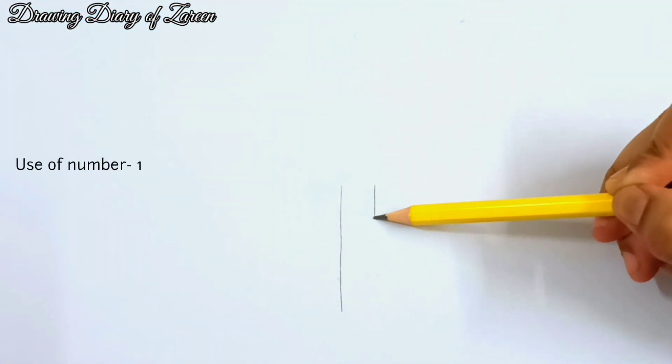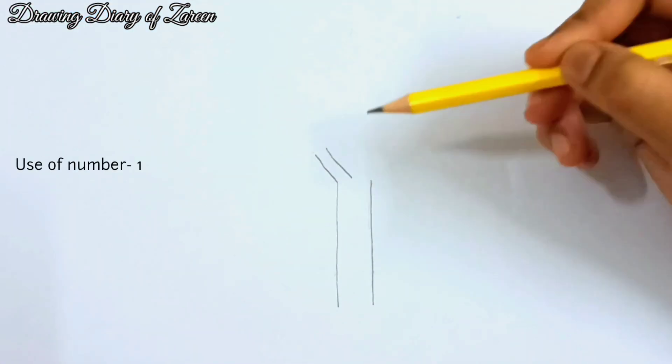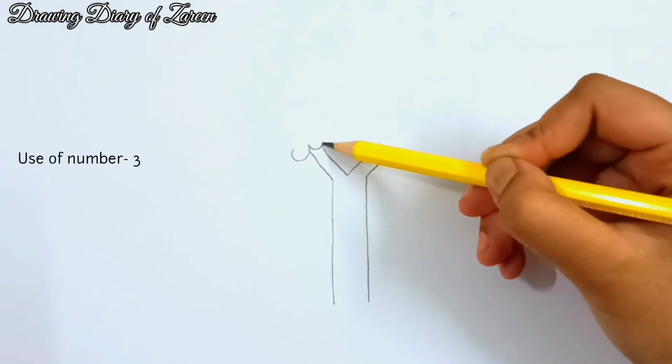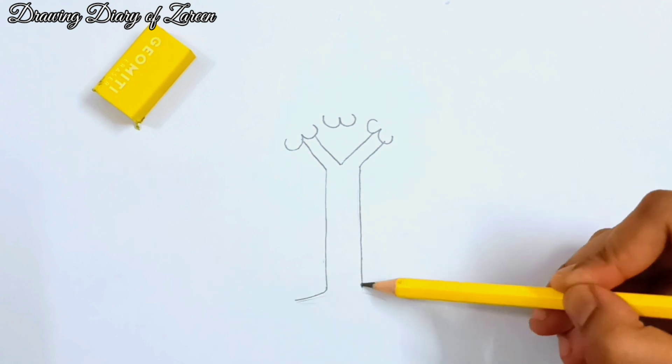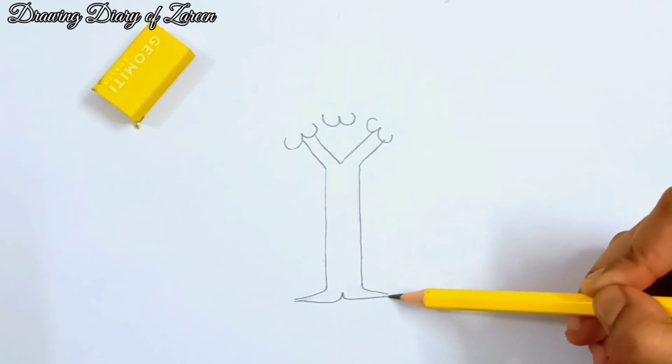At first we will draw the number 1 two times like this. Then we have to add the number 1 in two pairs like a V shape, and then we will add the number 3 like this. After that we will draw the root.